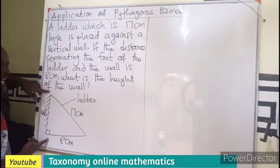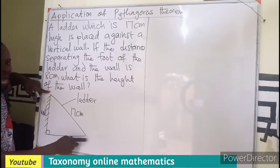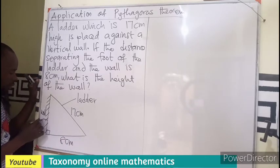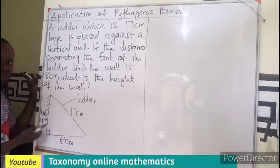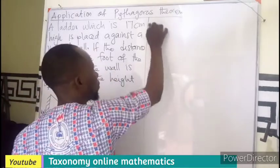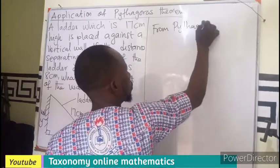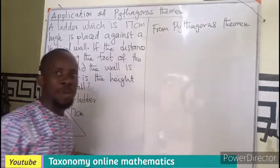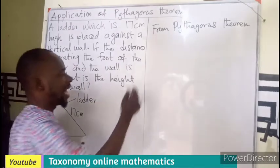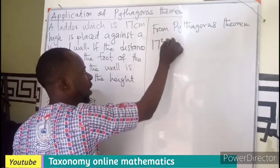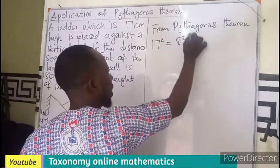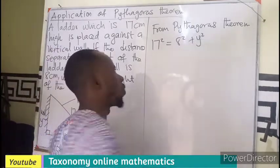Find how high is the wall or how high is the ladder on the wall. So I can label this one to be Y. So I have the three sides. So from Pythagoras theorem, I can deduce that the longer side which is 17 squared should be equal to 8 squared plus Y squared.